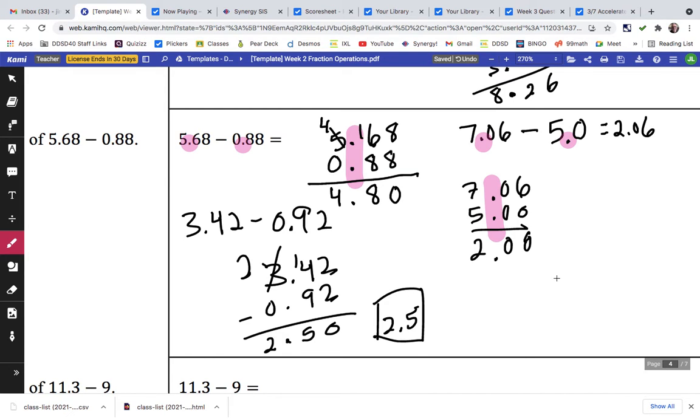So, to check our work, we could add it back up and do 2.5 plus 0.92, and see what we get. So we'll put the decimal there, we've got 2, 3.82.